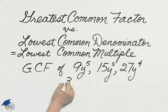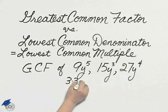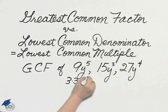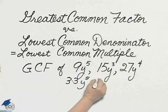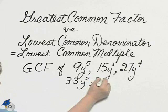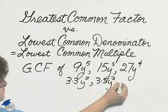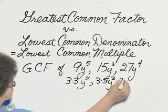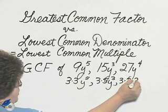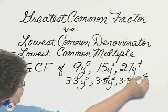Let's look at the factors of 9: 3 times 3, and then there's the y to the fifth. The factors of 15: 3 times 5, y cubed. The factors of 27: 3 times 3 times 3, y to the fourth.